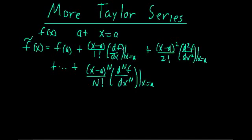Welcome back. In the last video we talked about a Taylor series expansion of the general function f of x, expanding it about the point x is equal to a. We found that if we want to approximate this function about this point, our Taylor series expansion f-tilde of x can be described as f evaluated at a, plus x minus a over 1 factorial times the derivative of f evaluated at a, plus x minus a squared over 2 factorial times the second derivative at a, all the way up to x minus a to the nth power over n factorial times the nth derivative of f evaluated at that point.